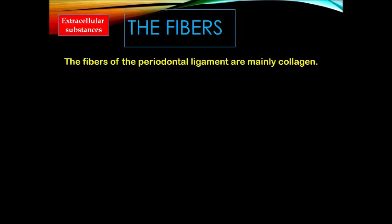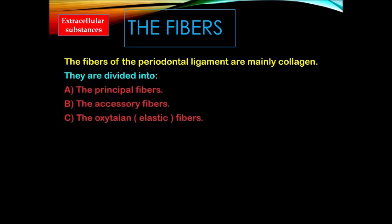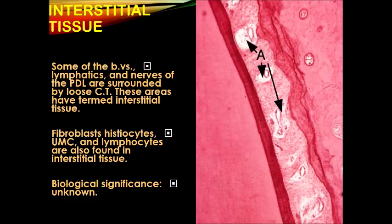The fibers of the periodontal ligaments are mainly collagen and they are divided into principal fibers, accessory fibers, and oxytalan fibers or elastic fibers. Interstitial tissue is found inside the periodontal ligament. Blood vessels, lymphatics, and nerves of the periodontal ligament are surrounded by loose connective tissue. These areas are termed interstitial tissue.